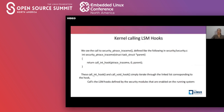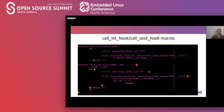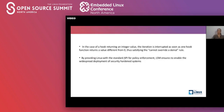The call_int_hook and call_void_hook macros simply iterate over the linked list corresponding to the hooks defined for the LSMs enabled on the running system. In the case of hooks returning integer values, the iteration is interrupted if any hook returns a non-zero value, thereby satisfying the 'cannot override the denial' rule. By providing limits with the standard API of policy enforcement, LSM ensures widespread deployment of security hardening of systems.